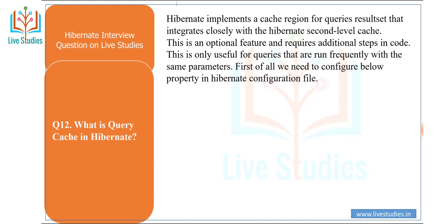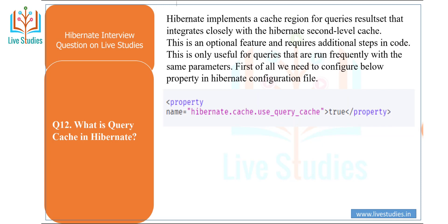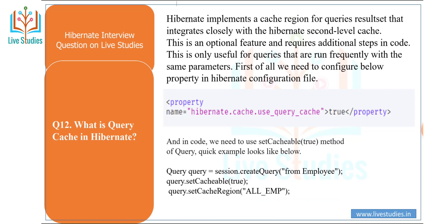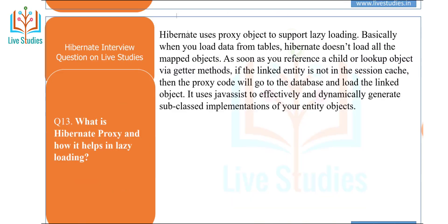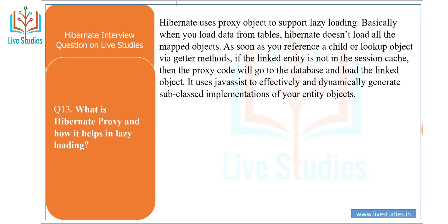What is the query cache in Hibernate? Hibernate implements a cache region for query results that integrates closely with the second-level cache. This is an optional feature and requires additional steps in code. It is only useful for queries that are run frequently with the same parameters. You need to configure the property hibernate.cache.use_query_cache=true in the Hibernate configuration file. In code, use query.setCacheable(true). For example: Query query = session.createQuery("from Employee"); query.setCacheable(true).